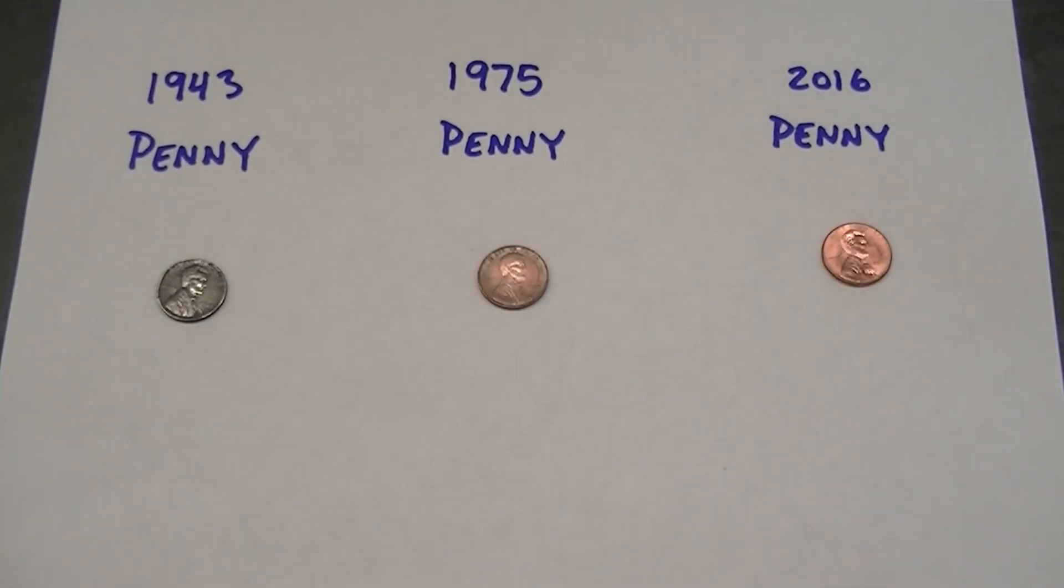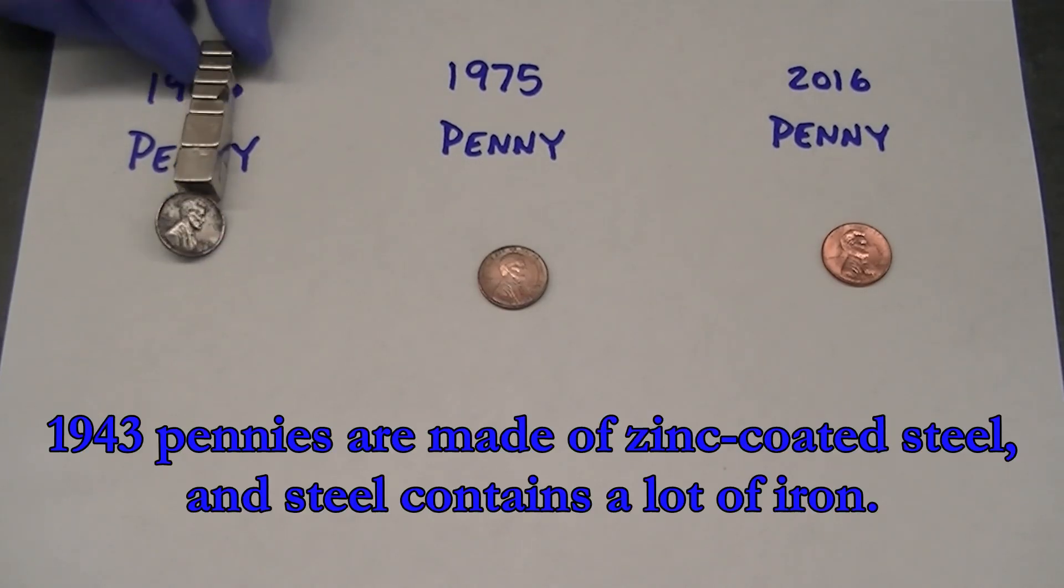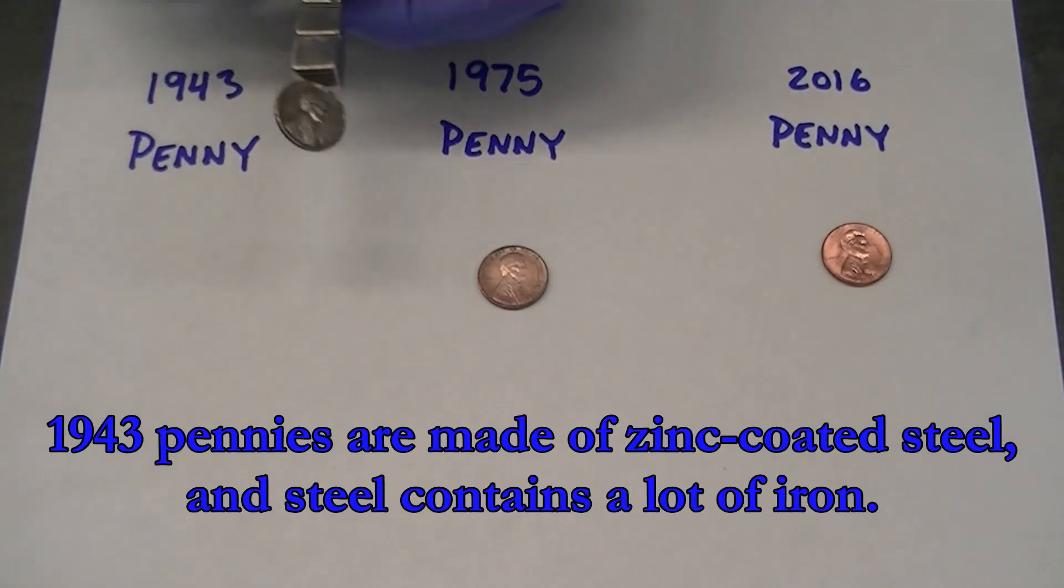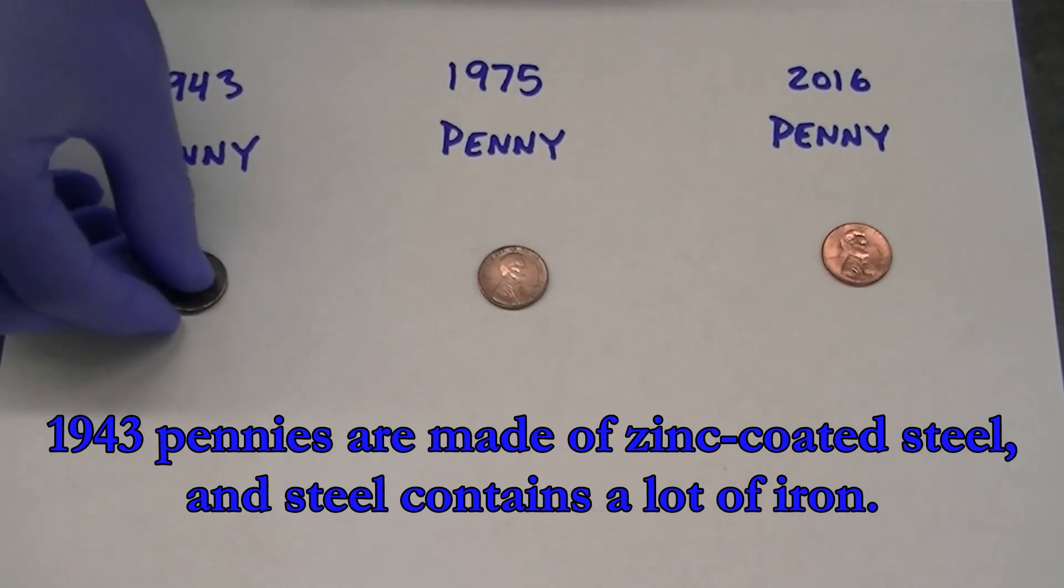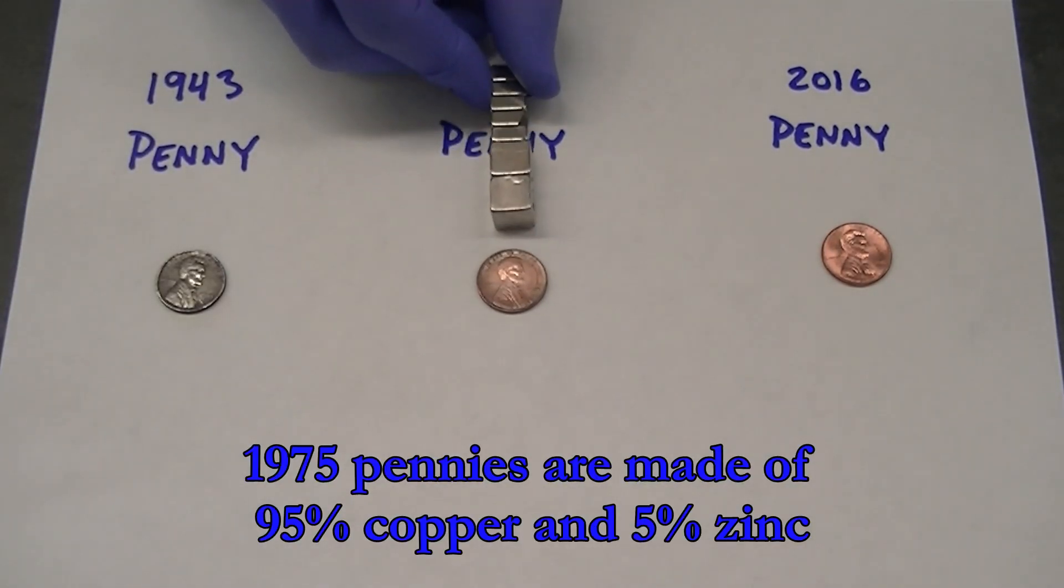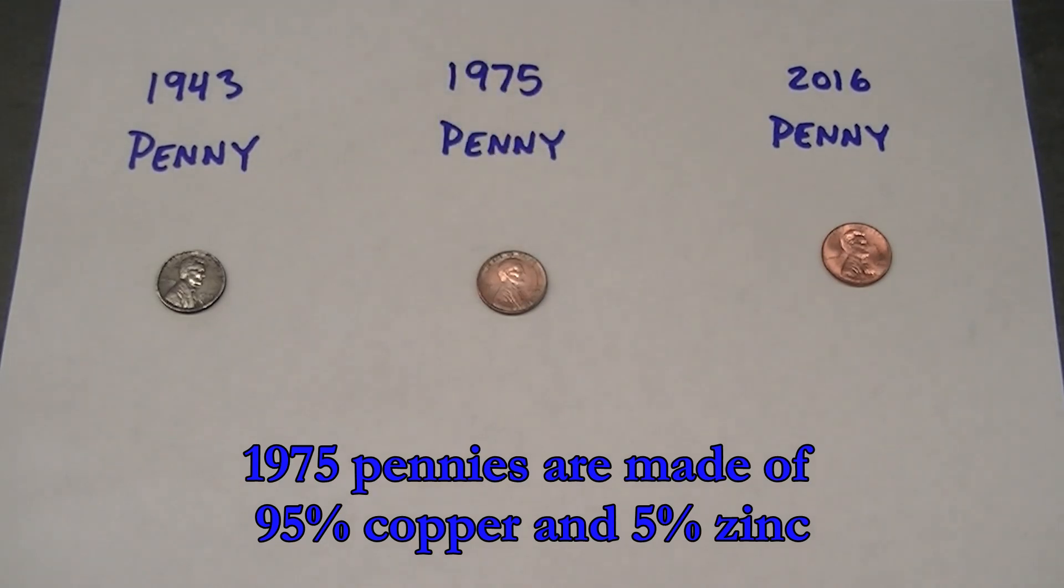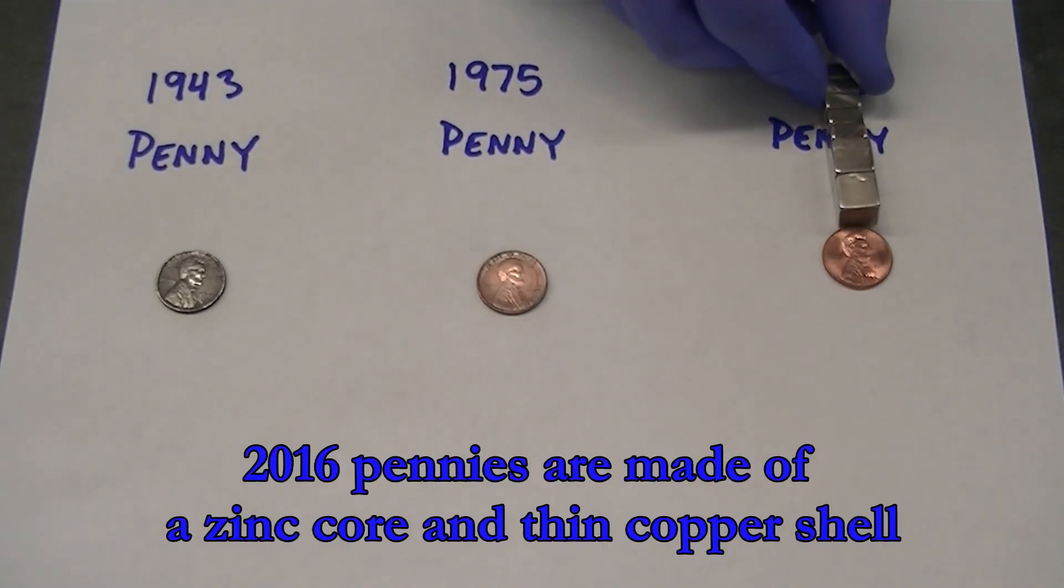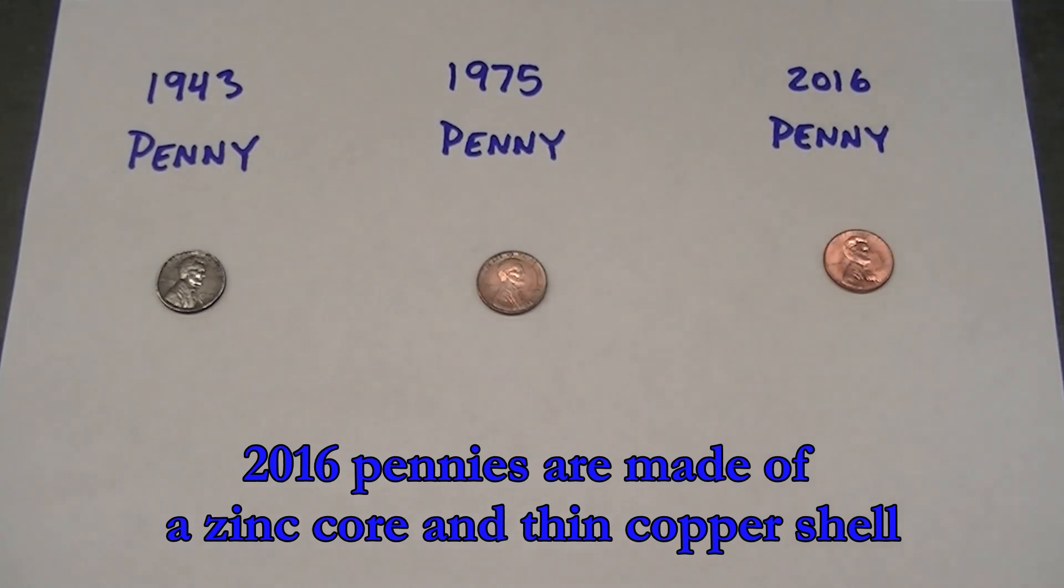These tests may be used to differentiate between pennies minted in different years. A 1943 penny that's made of steel, which is mostly iron, is attracted to the magnet. A 1975 penny that's made mostly of copper is not. And a 2016 penny that's made mostly of zinc also is not.